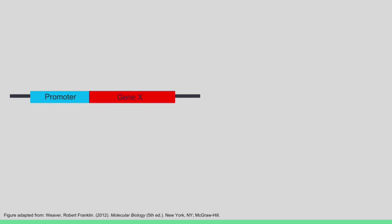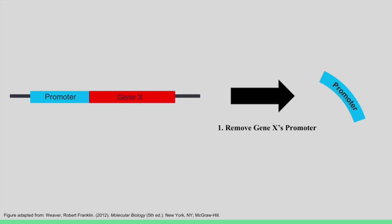We will now go into the specifics of how a CAT reporter gene assay can be performed. The first step to perform this assay is to remove the promoter from your gene of interest. In this case, we are interested in GeneX's promoter.